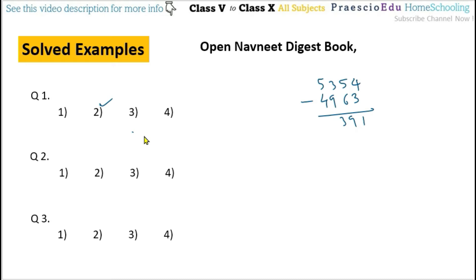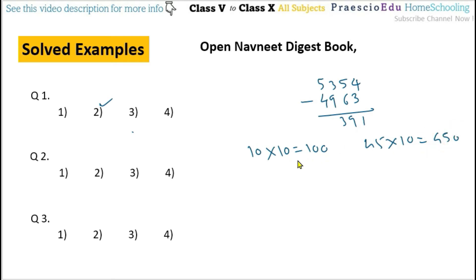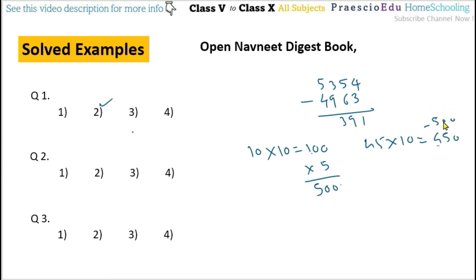Question number 2: a stationer purchases 10 sets of pencils, each containing 10 pencils — so 10 multiplied by 10 gives 100 pencils total. The cost of each set was rupees 45, so 45 multiplied by 10 sets equals rupees 450 total cost. He sold each pencil for rupees 5, so 100 pencils times 5 equals rupees 500 selling price. Since 500 minus 450 equals 50, there is a profit of rupees 50, given in option number 1.